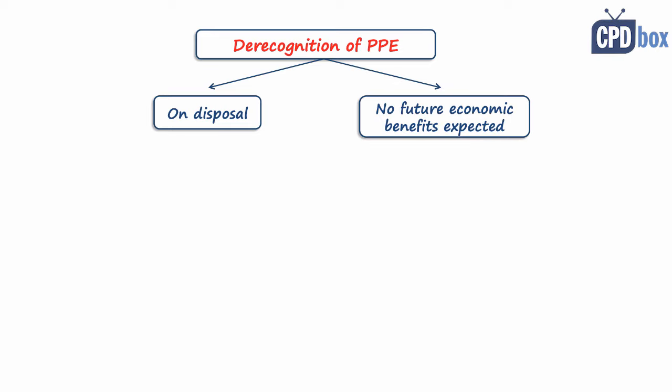Carrying amount of property, plant and equipment shall be derecognized on disposal - that is when you sell the asset, enter into a finance lease as a lessor, or you donate the asset. Or the asset shall be also derecognized when no future economic benefits are expected from its use or disposal. When the item of property, plant and equipment is disposed, gain or loss may arise, which is